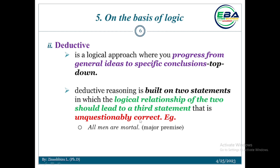The first statement is: 'All men are mortal.' This is the major premise — statement one, the logical statement. We establish a logical relationship between statements. The third statement that results from this relationship is unquestionably true.